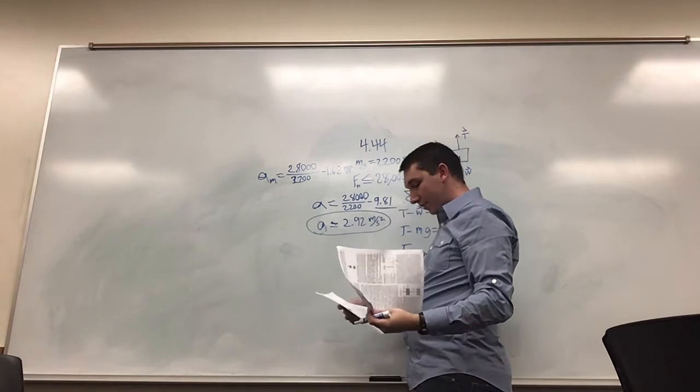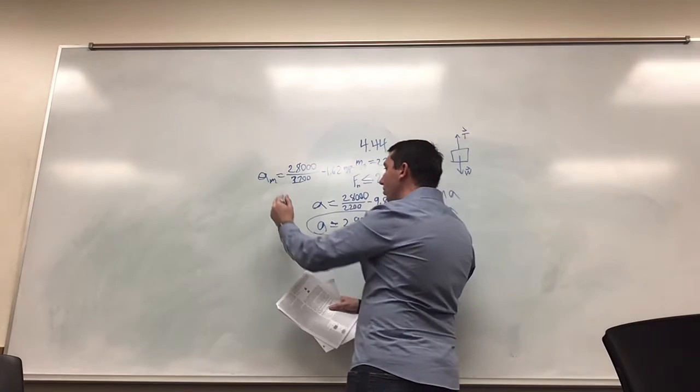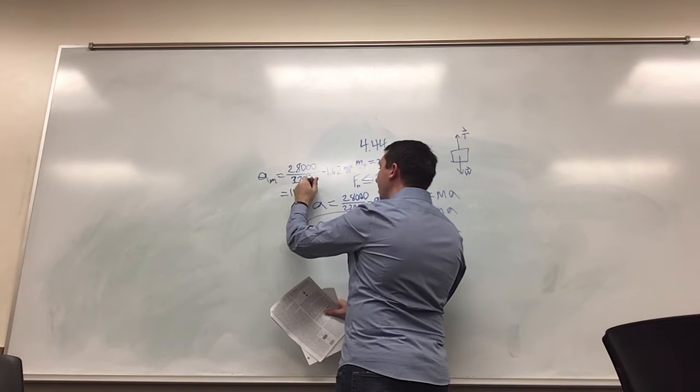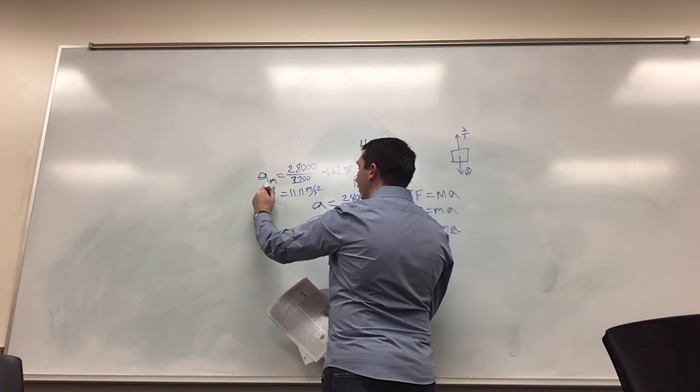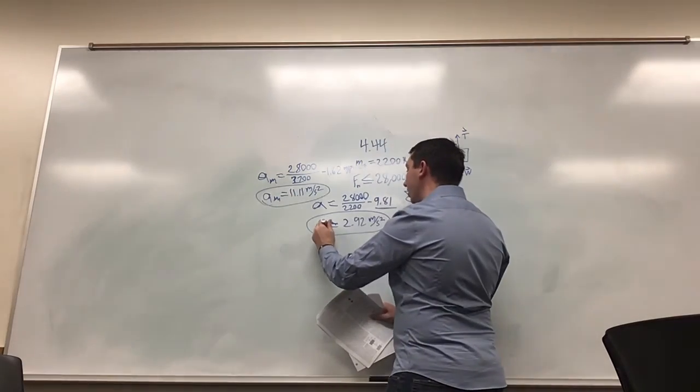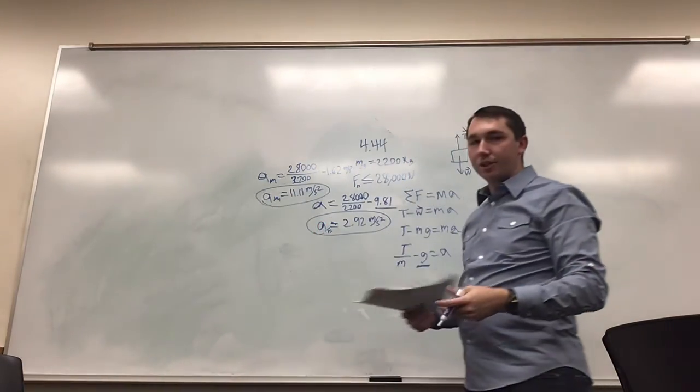When we do the math for that, that comes out to 11.11 meters per second squared for the acceleration on the moon. So that's the acceleration on Earth and the acceleration on the moon.